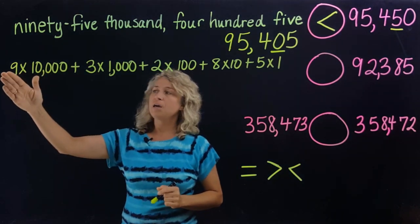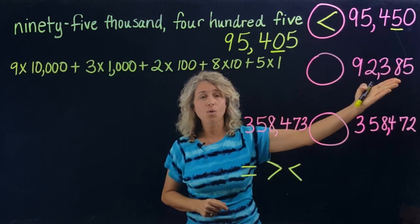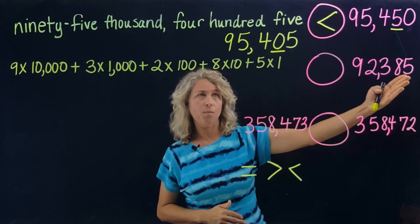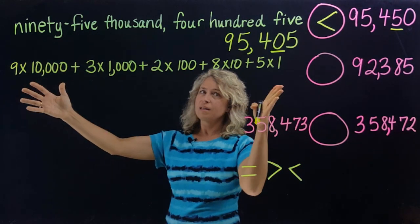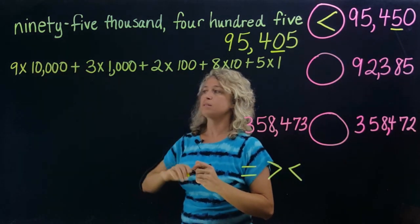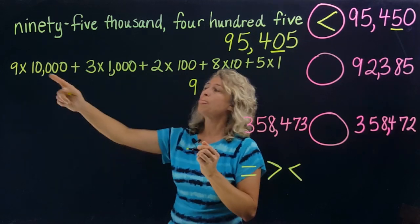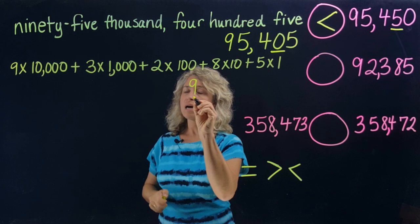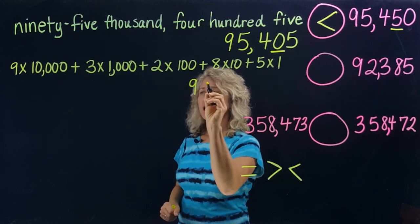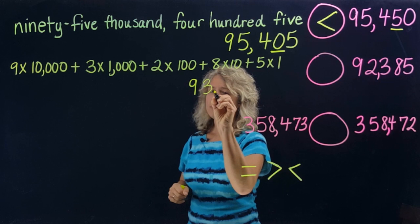Let's look at the next example. Here's a number that's been written in expanded form, and we're comparing it to a number in standard form. We have to write this back in standard form to compare. So let's rewrite this number: nine times ten thousand puts a nine in the ten thousands place. Three times one thousand is three thousand, so the three goes in the thousands place.